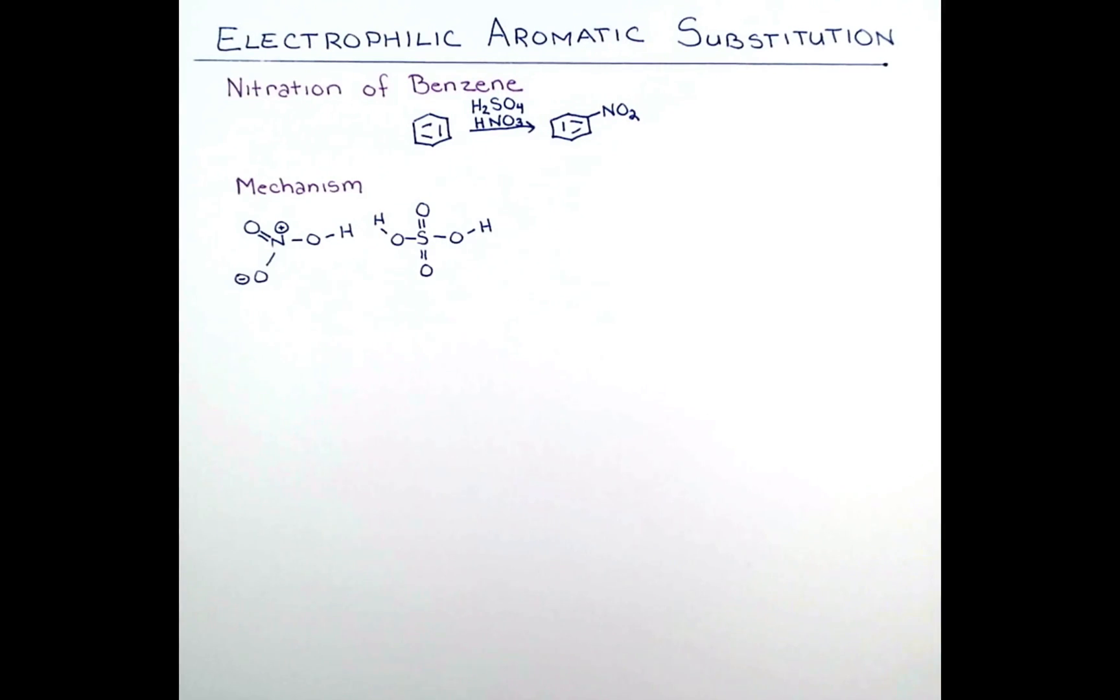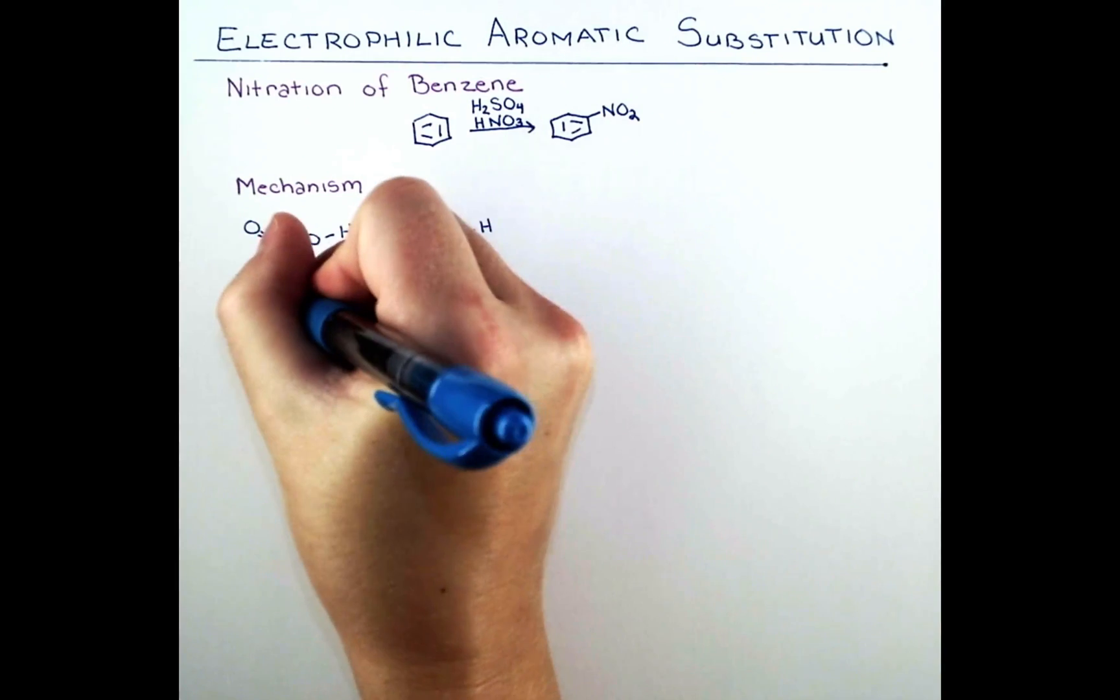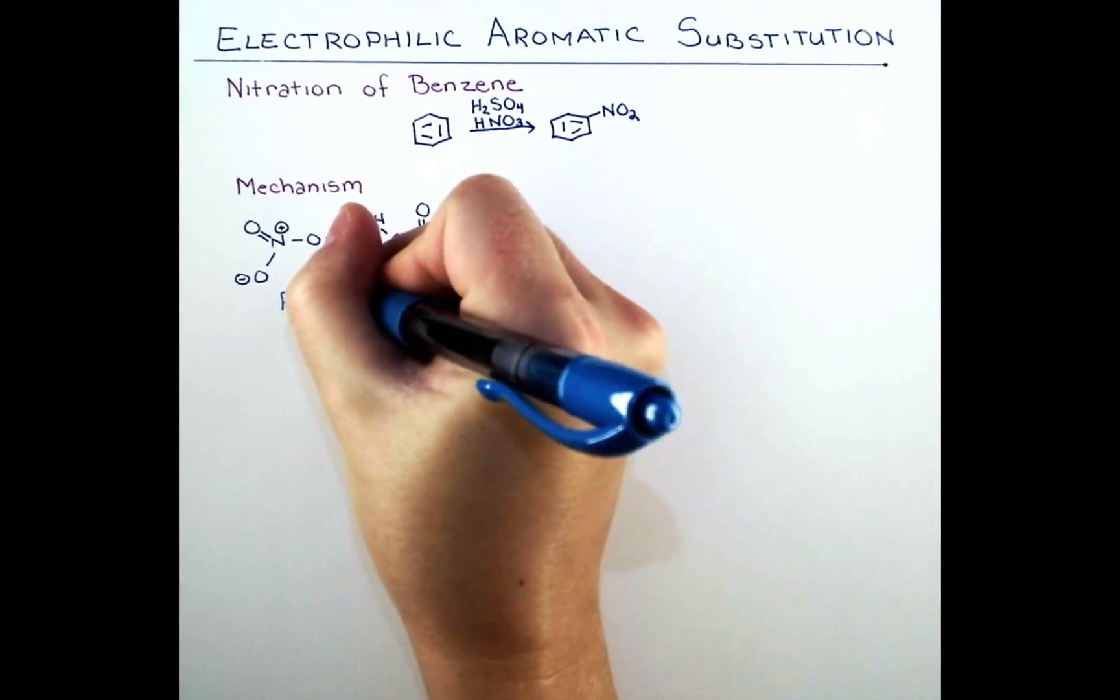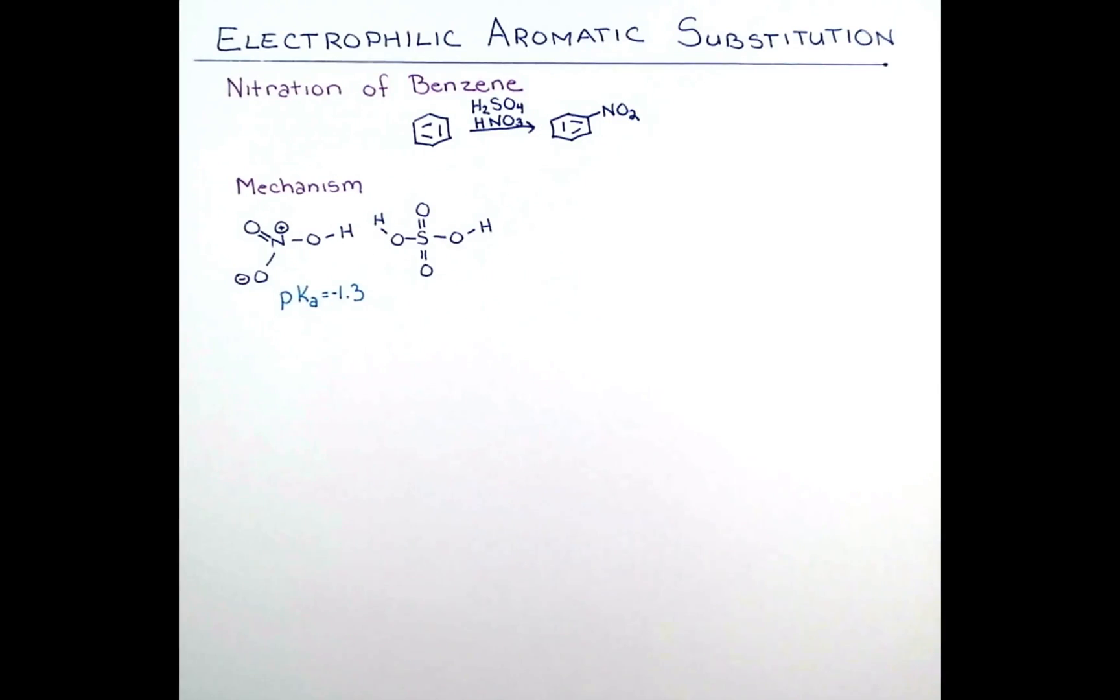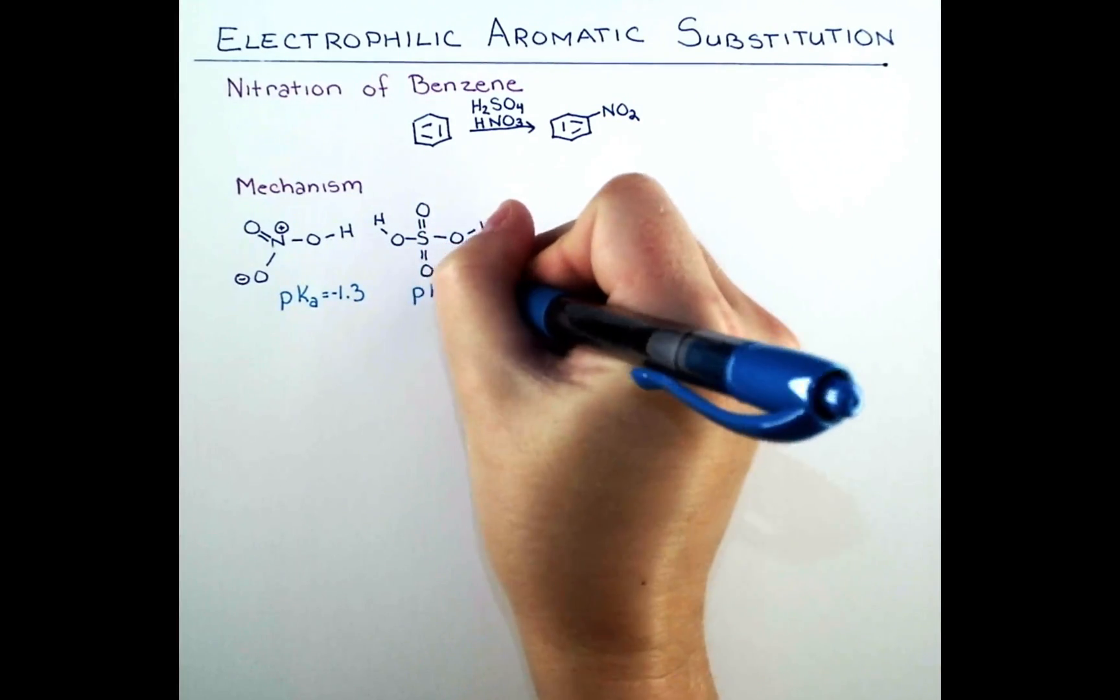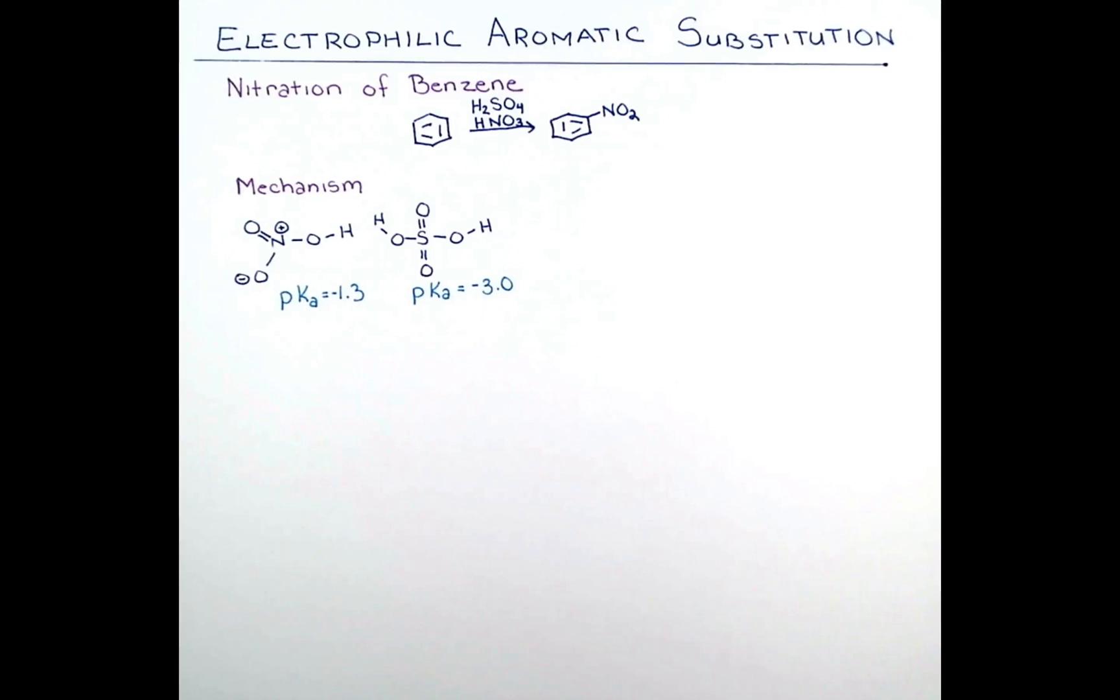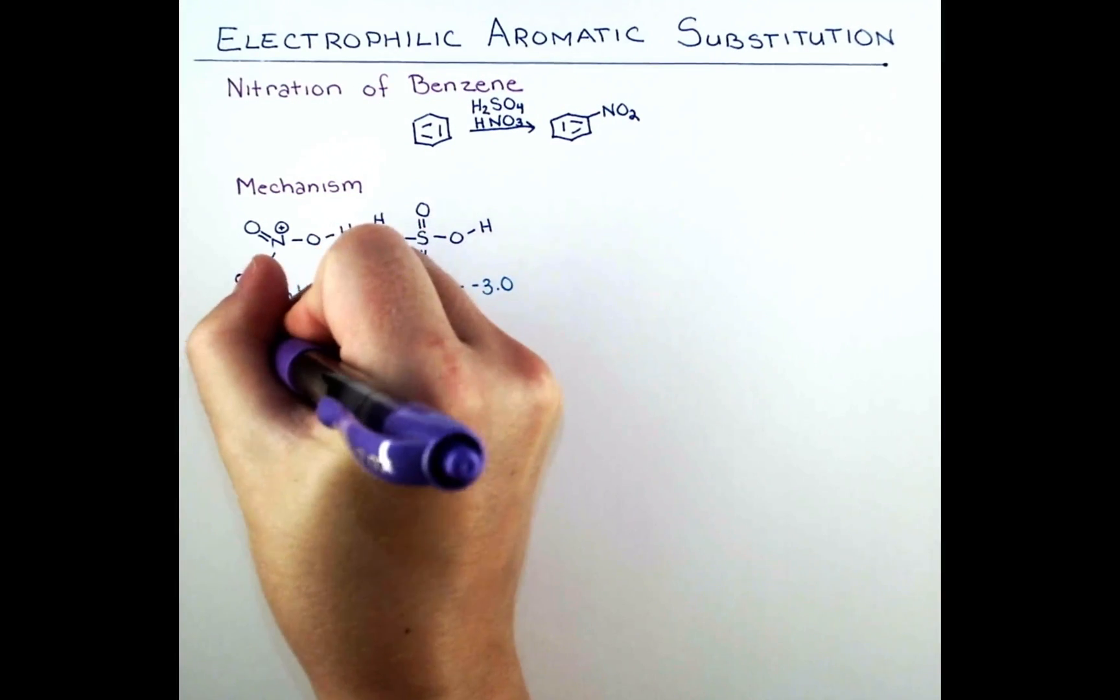Well, we can look at a pKa table and see that nitric acid has a pKa of minus 1.3 and sulfuric acid has a pKa of negative 3.0, but we can also look at stabilizing effects of the conjugate bases.